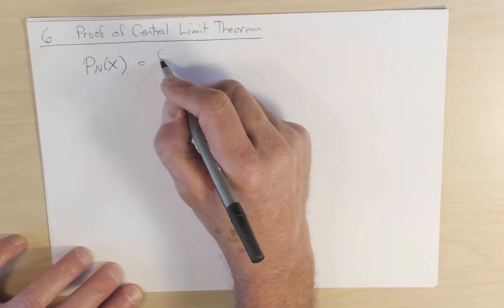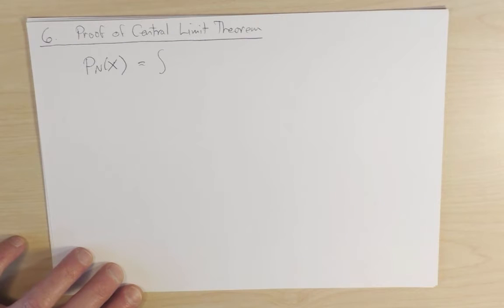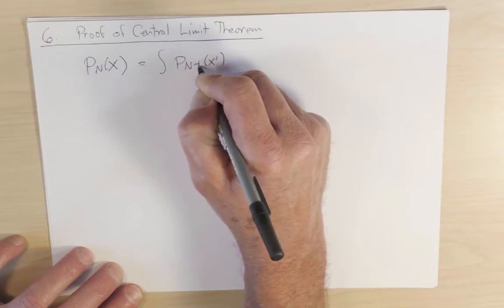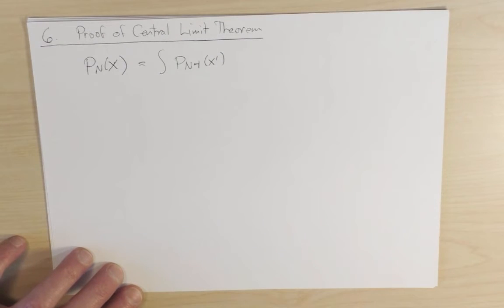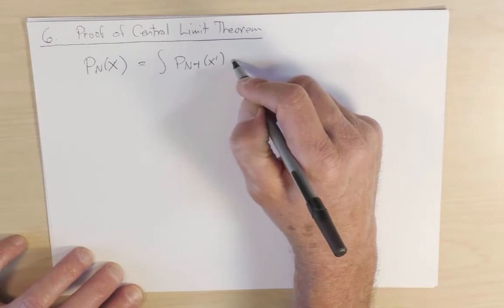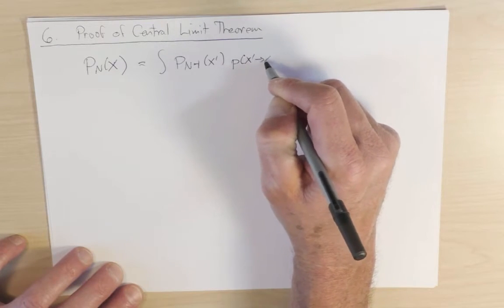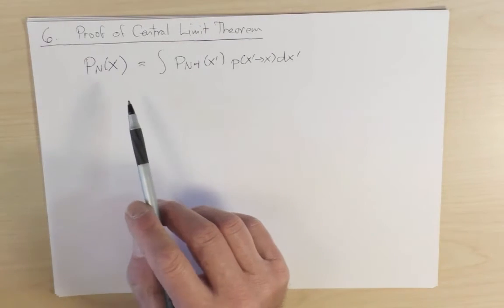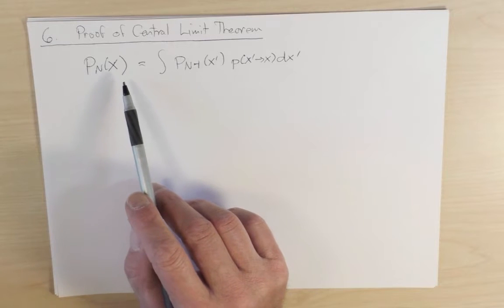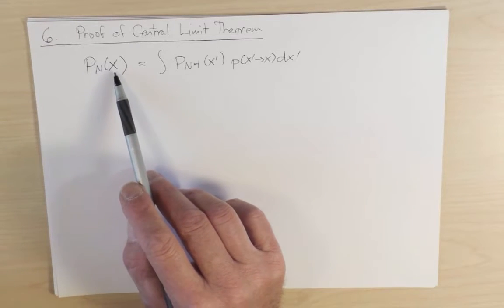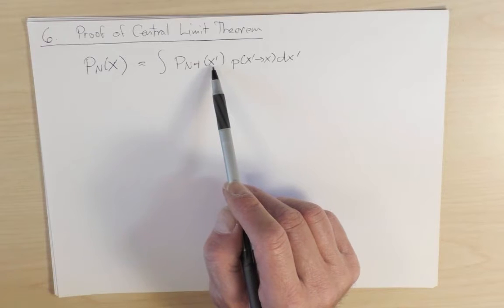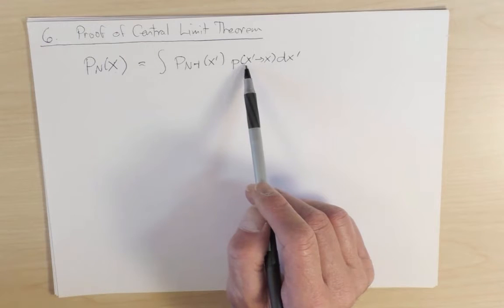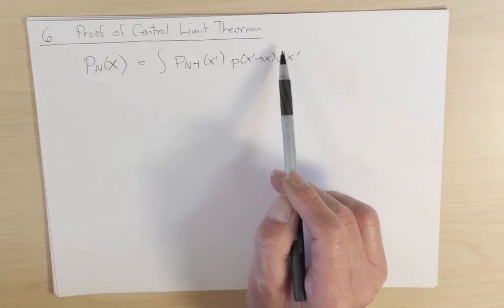In order to be at position x at the nth step, I had to be somewhere else at the n minus first step. So P_{n-1} of x prime. And then in a single step I went from x prime to x. So little p, x prime going to x, dx prime. This equation, known as the Chapman-Kolmogorov equation, expresses that in order to be at position x at the nth step, I was somewhere else at the n minus first step, and then I made a hop from the somewhere else to x. I have to integrate over all the intermediate somewhere else's in order to get to x.